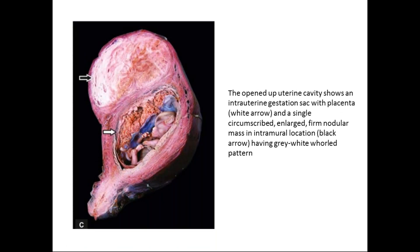This is another picture showing a pregnant uterus with a large intramural leiomyoma. The opened uterine cavity shows an intrauterine gestation sac with placenta, and a single circumscribed enlarged firm nodular mass in an intramural location with grey-white whorled appearance.